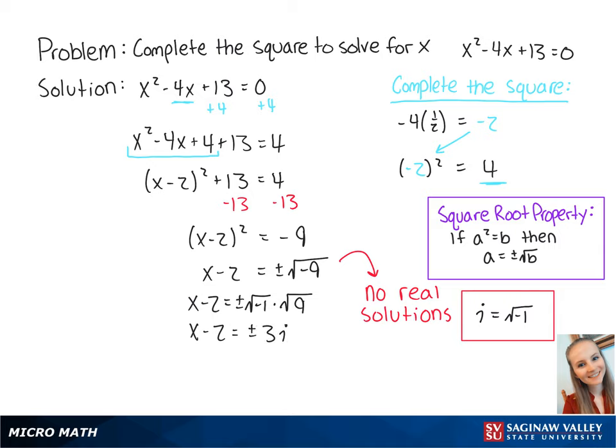If we add 2 to both sides of the equation, we get x equals 2 plus or minus 3i. So x equals 2 plus 3i or 2 minus 3i.